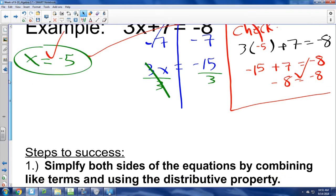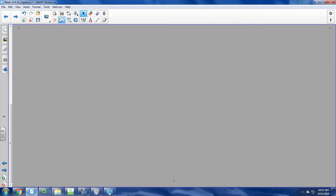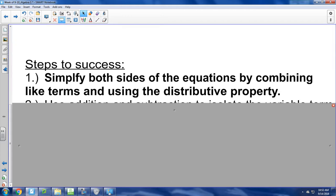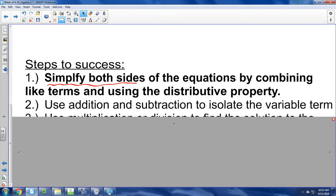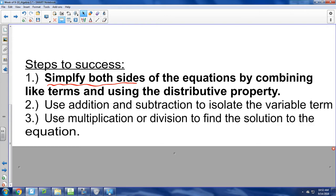So our steps for success here are as follows. The first thing you're going to want to do is simplify both sides. So look at the left side and look at the right side and simplify it. That means combine like terms, that means use the distributive property. Once we've done step one, then we want to usually use addition and subtraction to isolate the variable. And our third is to use multiplication or division, find the solution, get the x alone. Is that all good? Everybody cool with that?